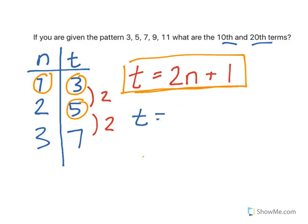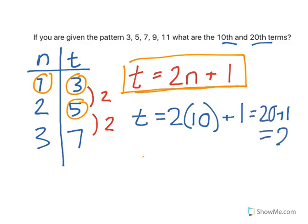You can see t equals 2, it's going to be the 10th term, which goes in for n, plus 1, which equals 20 plus 1, which equals 21. So the 10th term, t10, is 21.